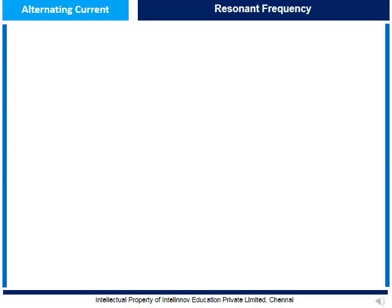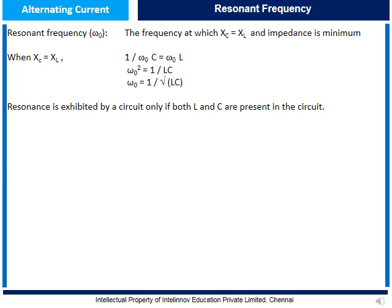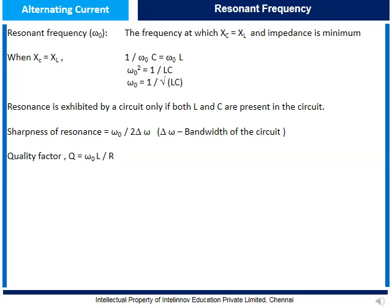Let us now understand resonance and quality factor. The resonance frequency ω₀ is the frequency at which XC equals XL and impedance is minimum. When XC equals XL: 1/ω₀C equals ω₀L, giving ω₀² equals 1/LC, so ω₀ equals 1/√(LC). Resonance occurs only if both an inductor and capacitor are present. The sharpness of resonance is given by ω₀/2Δω, where Δω is the bandwidth. The quality factor Q equals ω₀L/R, and sharpness of resonance equals the quality factor.